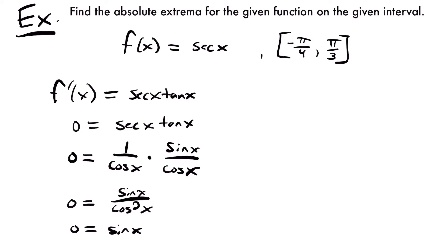Now we just need to ask where sine equals zero on this interval. Sine equals zero at intervals of pi: 0, pi, 2pi, 3pi, and so on. But our interval stops at pi over 3, which is before pi. So the only value that matters here is x equals zero, since pi and 2pi are not included in our interval. Our only critical number on this interval is x equals zero.